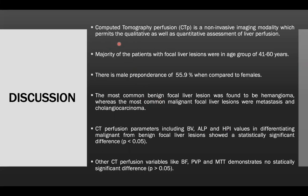Discussion. CT perfusion is a non-invasive imaging modality which permits qualitative as well as quantitative assessment of liver perfusion. Majority of the patients with focal liver lesion were in the age group of 41 to 60 years, with a male preponderance of 55.9%. The most common benign focal liver lesion was hemangioma, whereas the most common malignant focal liver lesions were metastasis and cholangiocarcinoma. CT perfusion parameters including blood volume, arterial liver perfusion and hepatic perfusion index showed a statistically significant difference in differentiating malignant from benign focal liver lesions, whereas blood flow, portal venous perfusion and mean transit time demonstrated no statistically significant difference.